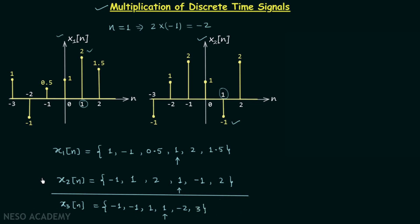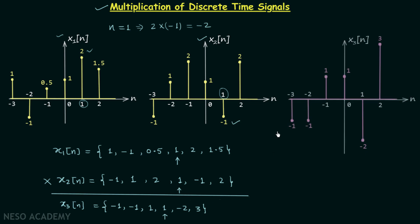This is what we have after multiplying x1n and x2n — the resultant signal x3n. When you plot this you will find the waveform will look like this. Performing the addition and multiplication of discrete time signals is a very easy affair, but I have to cover each and every topic, so along with the most complicated topics I have to take the easiest ones as well. This is all for this lecture, see you in the next one.